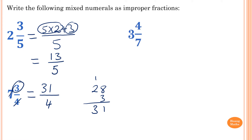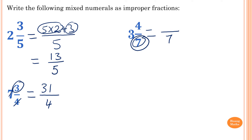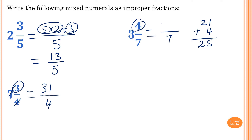Next, 3 and 7 over 4 — wait, 3 and 4 sevenths. The denominator is 7. So 7 times 3 is 21, then add 4, which gives us 25. So the answer is 25 over 7.